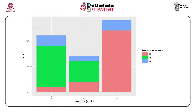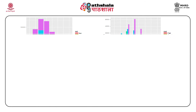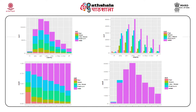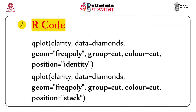Let us go back to the diamond example. Here we are trying to have a bar plot with the categorical variable clarity. We are changing the position argument with stack, dodge, fill and identity. You can have multiple bar diagrams, component bar diagrams, subdivided bar diagrams and types like that just by changing the position argument. You can have a frequency polygon as well with the argument geom = 'freqpoly' and then experiment with the position argument.